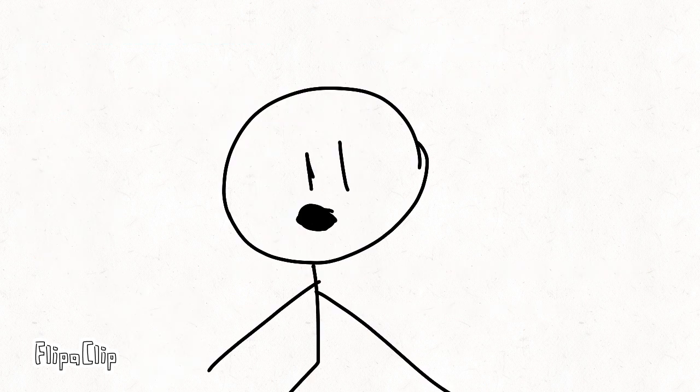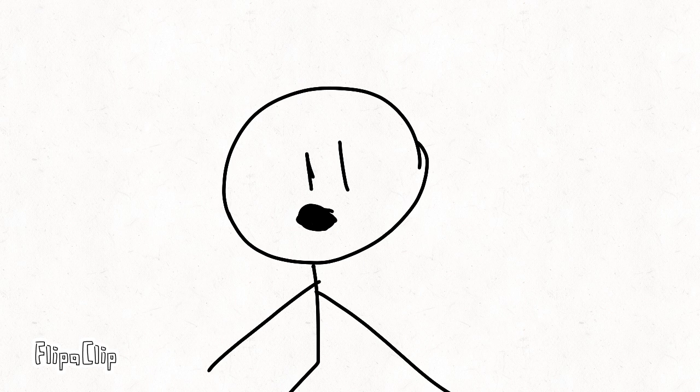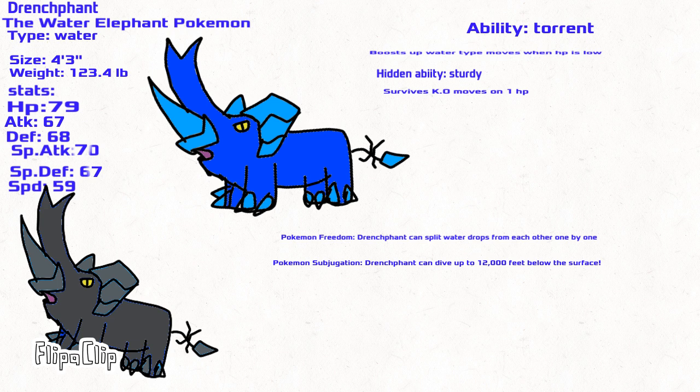And finally, it's time for your water starter to evolve. Elemoist evolves into the Water Elephant Pokemon, a water type.